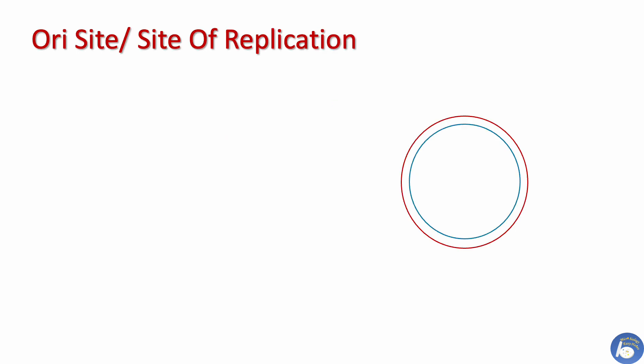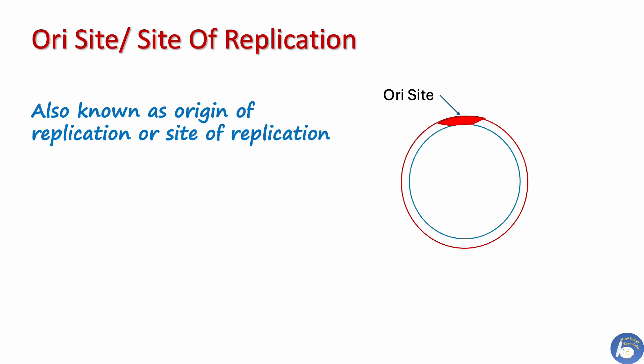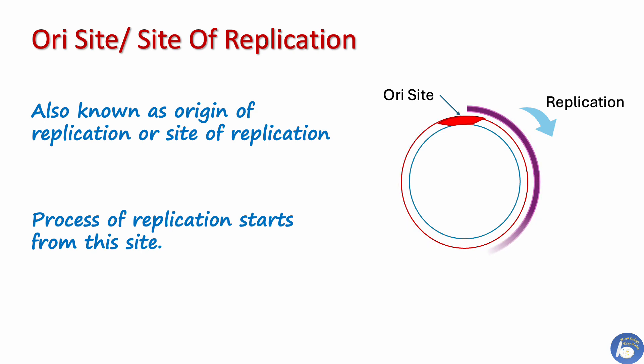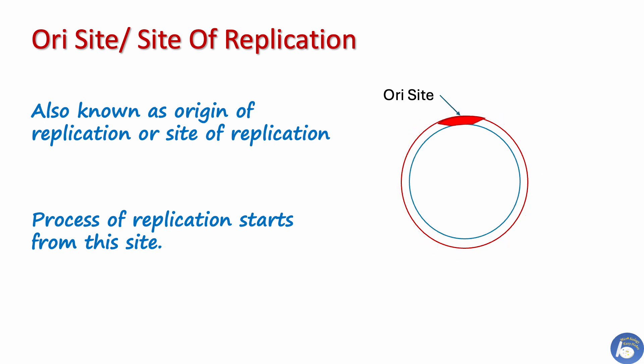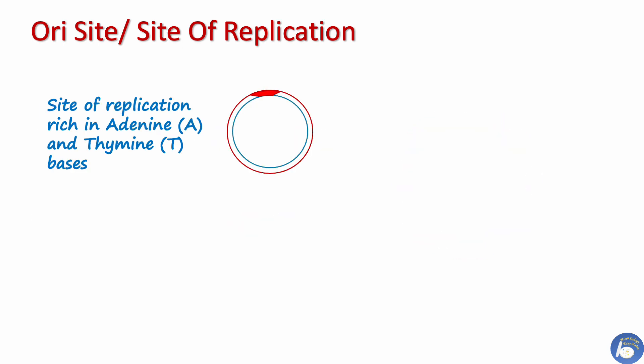The first important component is the origin of replication, also known as the site of origin or site of replication. This is the place from where the process of replication begins. The site of origin is rich in adenine and thymine base pairs.